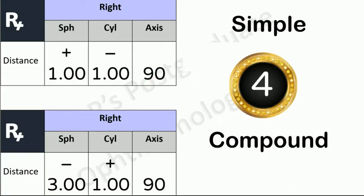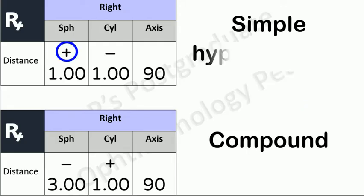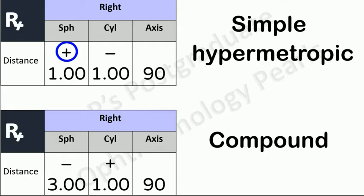Now we know whether it is simple or compound, but is it myopic or hypermetropic? The sign of the sphere gives you the answer — so this is a hypermetropic astigmatism, and this is a myopic astigmatism.